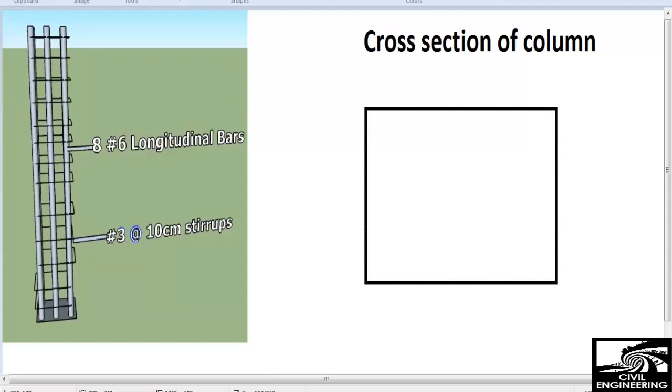First we have to draw the concrete outline, this whole outline of the concrete. Now the inner rectangle I show you is the stirrups, we call it ties in columns and stirrups in beams. The circles are the longitudinal bars.